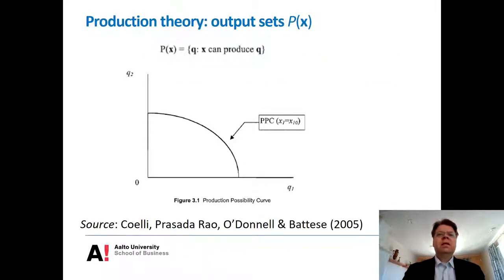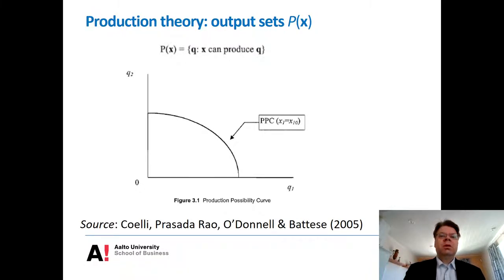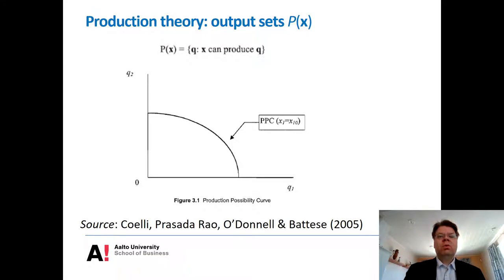Recall from the previous lesson that in production theory we usually think about the multiple outputs setting in terms of the output set — a mapping from your input vector x to an output set that indicates the possible output combinations that can be produced with a given set of inputs. The producer can choose whether to use the resources to produce output one or output two, or some combination of those two, and the curvature of the frontier depends on possible synergies in joint production. The more it is curved away from the origin, the more synergies there are.